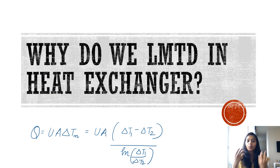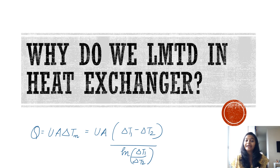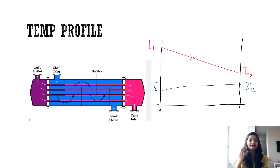Have you ever wondered why we use log mean temperature difference in heat exchangers? This question has been asked many times in interviews. The heat equation says Q is equal to UA times delta Tm, that is the log mean temperature difference.